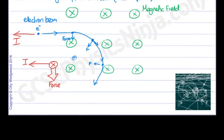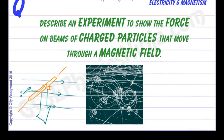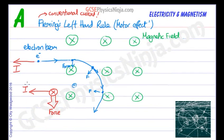So there's your experiment to demonstrate the force on beams of charged particles that move through a magnetic field. Just watch out: if you're dealing with electrons, then conventional current must be going in the opposite direction.